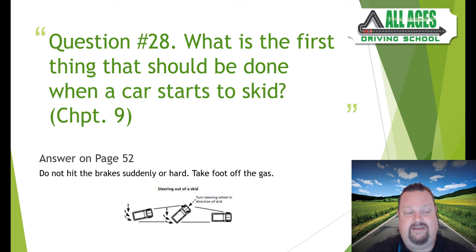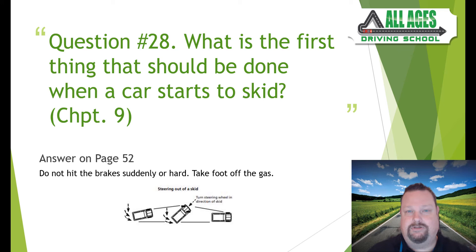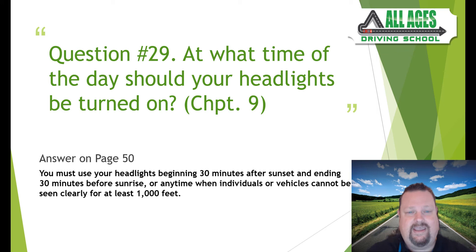Question number twenty-eight: what is the first thing that should be done when a car starts to skid? Chapter nine, answer on page 52. Do not hit the brakes suddenly or hard. Take your foot off the gas — that's the very first thing. Then turn in the direction of the skid, meaning whatever direction the back end of your car goes, that's where you turn. An easier way to remember: turn the wheel in the direction you were trying to drive. Take your foot off the gas and you'll pull out of the skid.